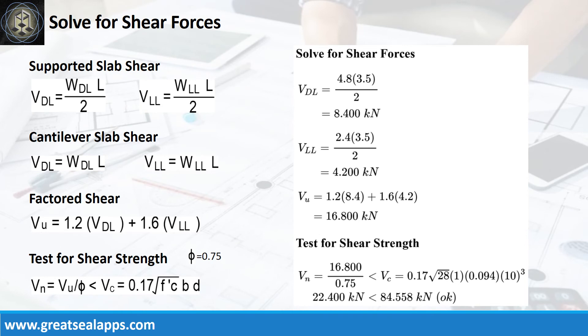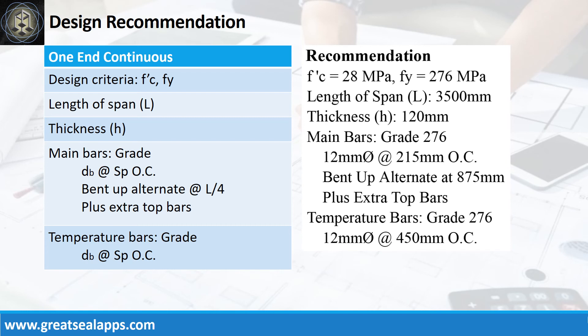The shear force from dead load is 8.4 kN, and live load is 4.2 kN, for a factored shear force of 16.8 kN. The nominal shear force is 22.4 kN, less than 84.558 kN concrete capacity.